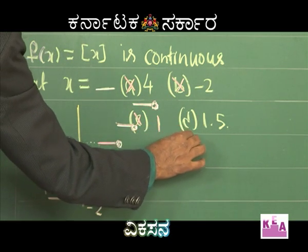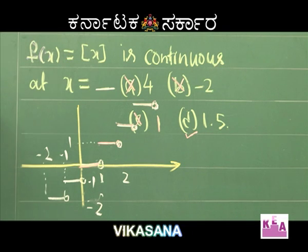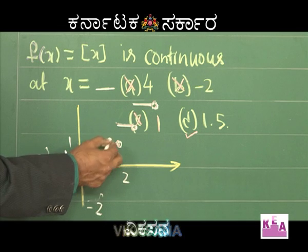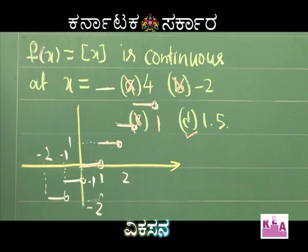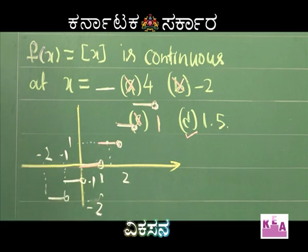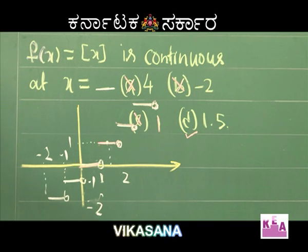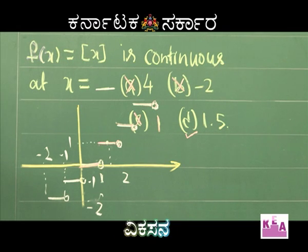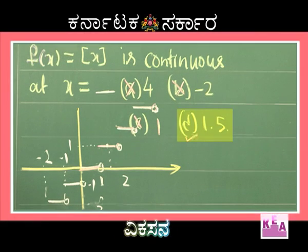Option D is correct: at x equals 1.5, in the neighborhood of 1.5 there is no break in the graph. The greatest integer function is continuous for all values of x except where x is an integer.